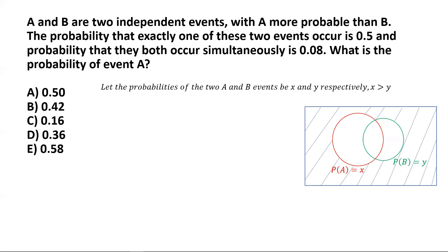The event of joint or simultaneous occurrence of A and B is represented by the common area between the two circles — the area of intersection or overlap. In set theory notation, that event is represented by A intersection B. The probability of A intersection B equals the product of the two individual probabilities, P(A) and P(B).